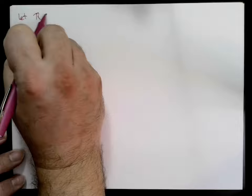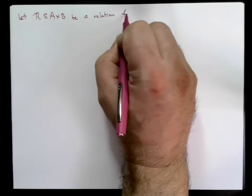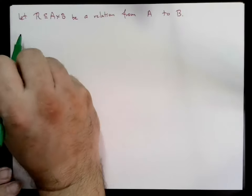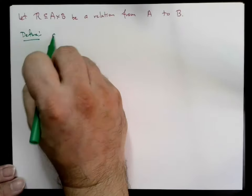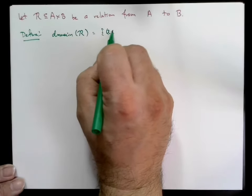Recall that we've discussed relations in the last lecture. Given sets A and B, a relation from A to B is a subset of the Cartesian product A times B.